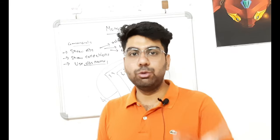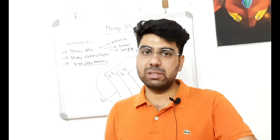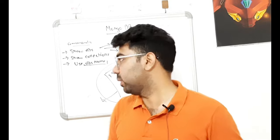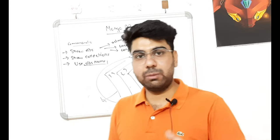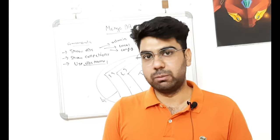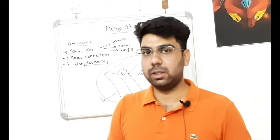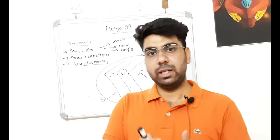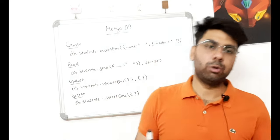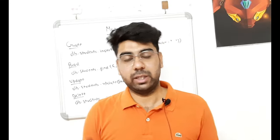The third command is 'use dbname'. That means to create and use a database. So if I want to create a database called 'college', I will write 'use college' and then perform all my CRUD operations on it. The special thing is that you don't have to create the database first and then use it separately. With only one command — 'use college' — MongoDB will create the database with that name and use it simultaneously.